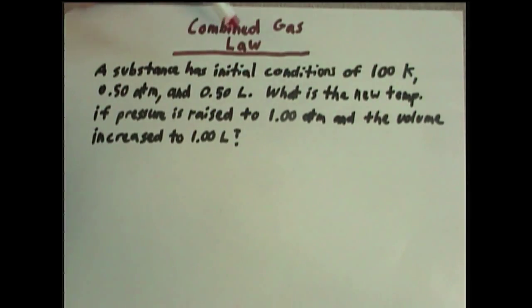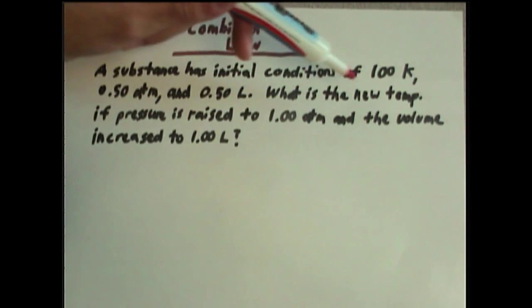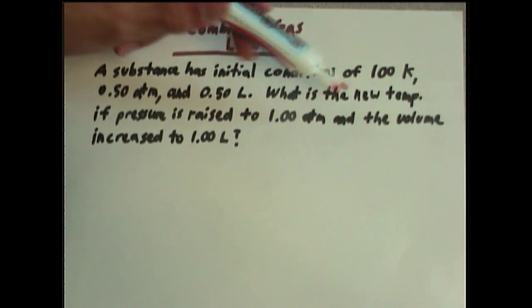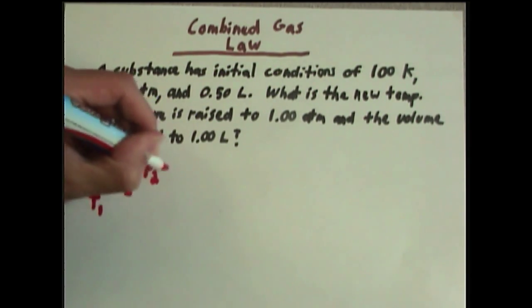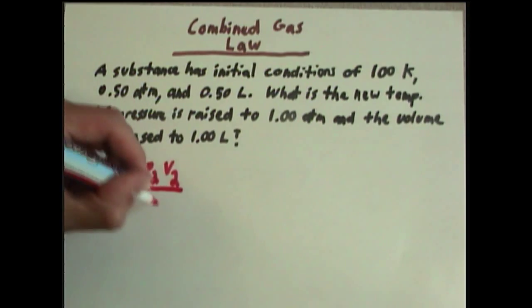A substance has initial conditions of 100 kelvins, 0.5 atmospheres, and 0.5 liters. What is the new temperature if pressure is raised to 1 atmosphere and the volume increased to 1 liter? Now, this problem is an example of the combined gas law, which, if you recall, the equation for the combined gas law is P1V1 over T1 equals P2V2 over T2.